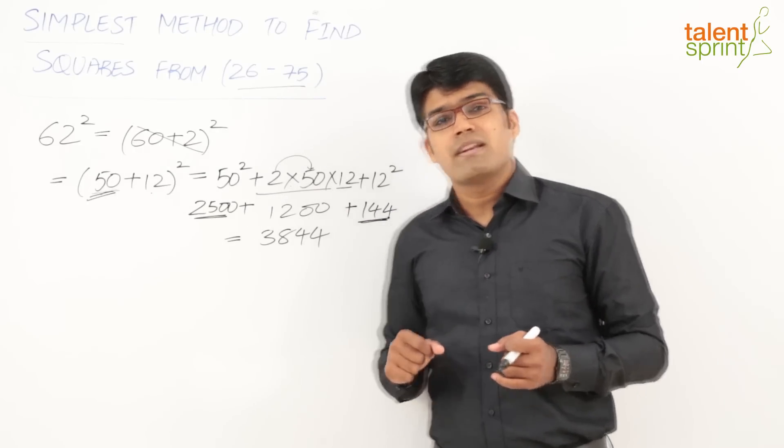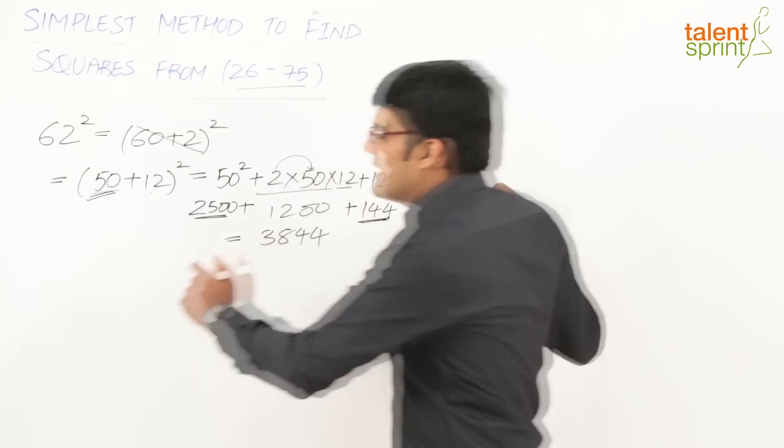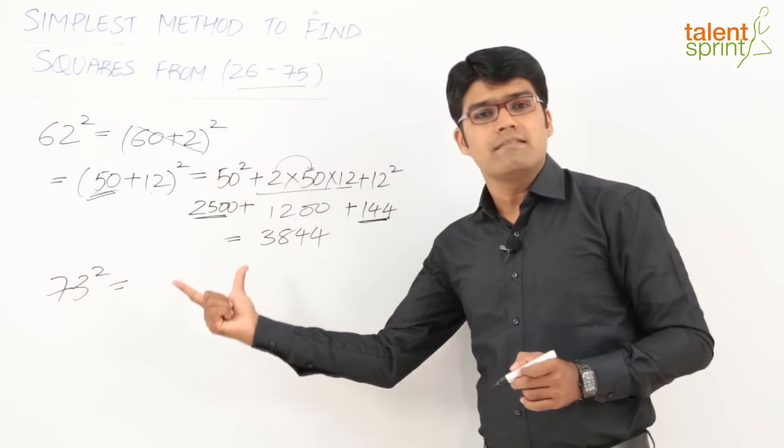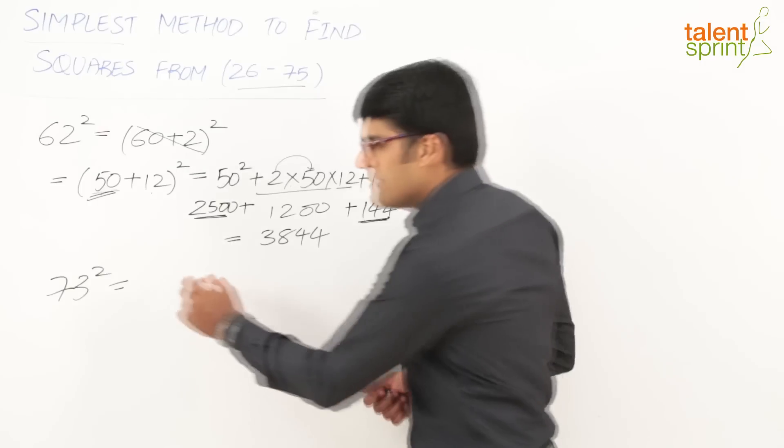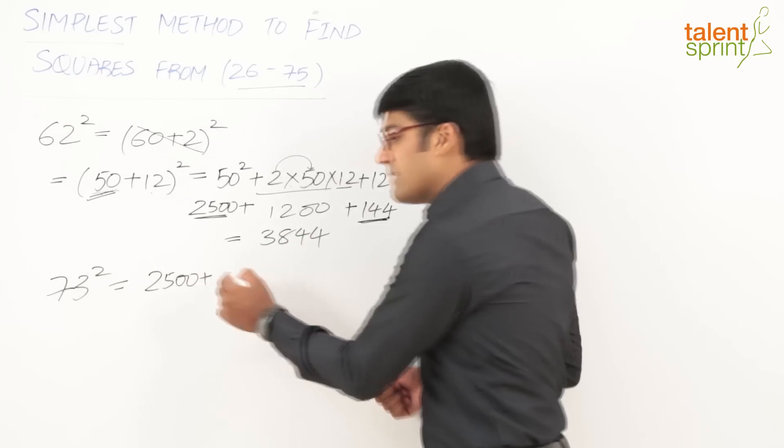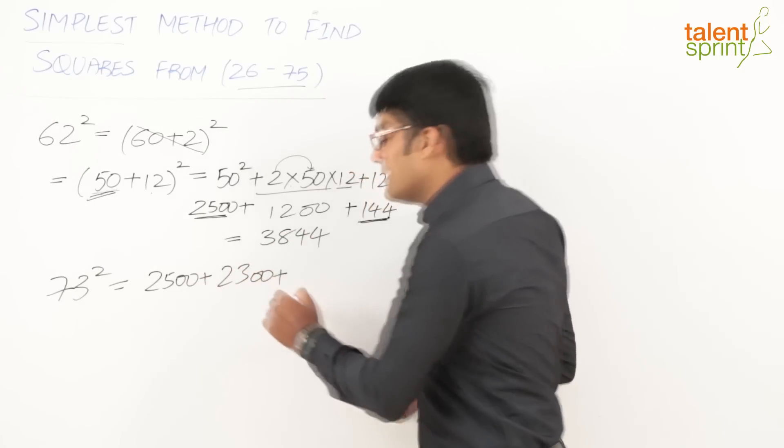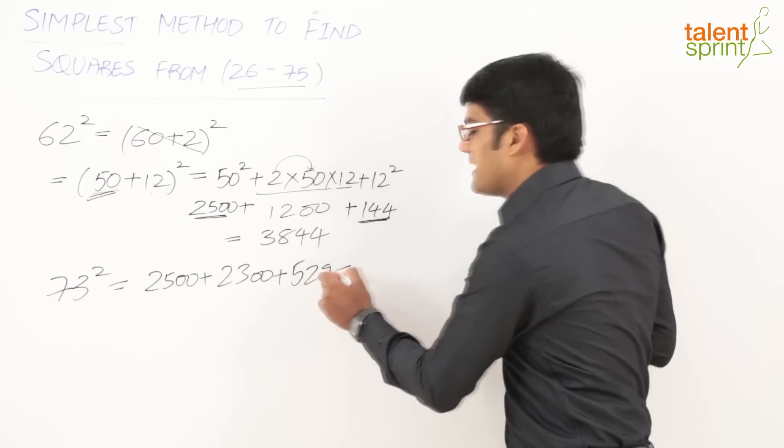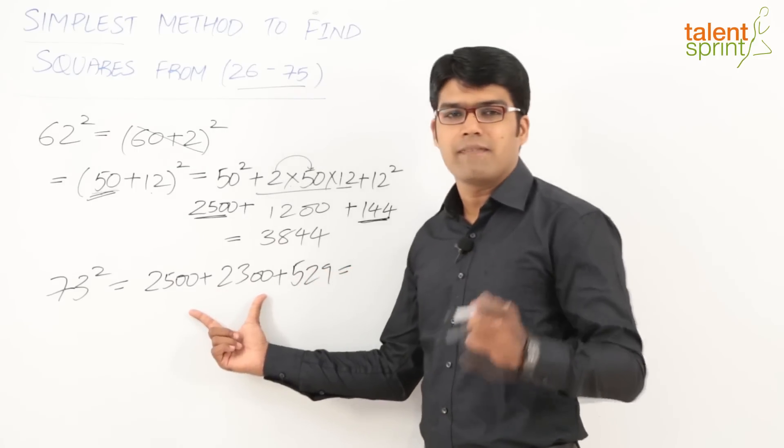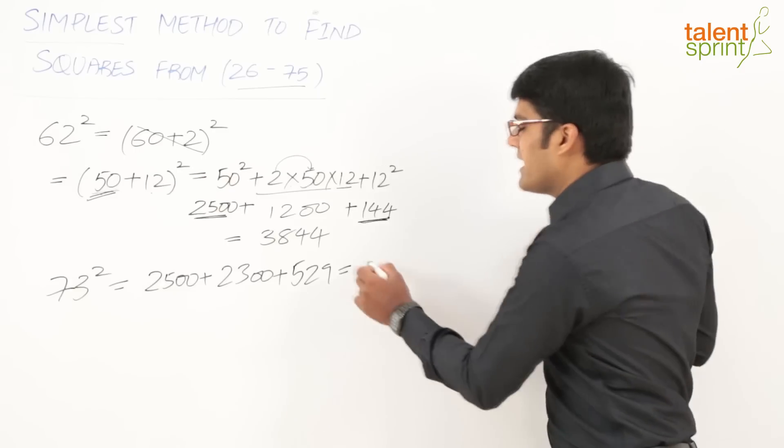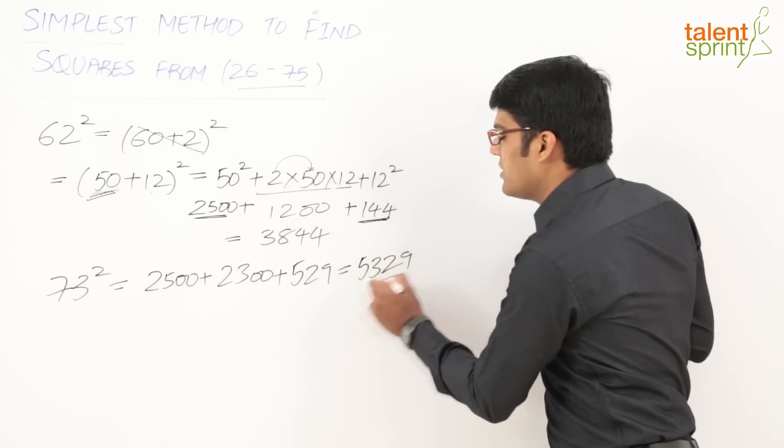Let us take a few more examples to understand this. Let us say we have to find out 73². If you break it, we will get (50 + 23)². So first term is 2500, plus since b is 23, the second term will be 2300. And the third term is b², that is 23², which is 529. Now simply add these terms here to get the final answer. So 2500 + 2300 is 4800 + 529 is 5329.